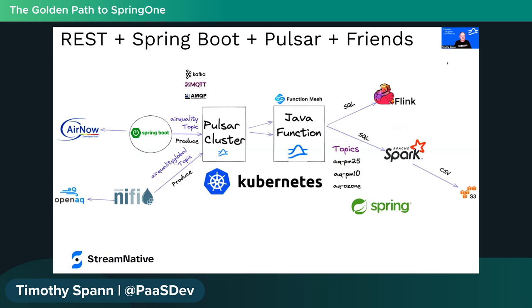The demo app is a Spring Boot app reading from a REST endpoint and publishing to an air quality topic. There are versions using Kafka, MQTT, and AMQP — all going to the same Pulsar cluster. A NiFi app also sends data from a different REST endpoint to a different topic. A Pulsar Function combines both topics, validates the data, checks the schema, and routes messages to three subtopics based on type: PM2.5, PM10, or ozone readings. Spring listeners then consume from those subtopics.